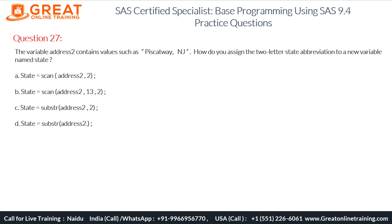Option C is: state = substr(address2, 2). The SUBSTR function searches for characters, not words. Here, address2 comma 2 means it starts at character position 2. It also does not mention the length, so it would return the character 'i' onward — not 'NJ' as we want. So this option is also wrong.